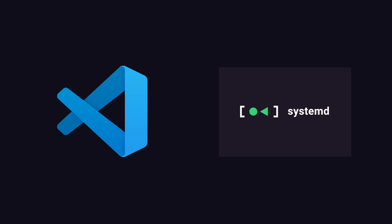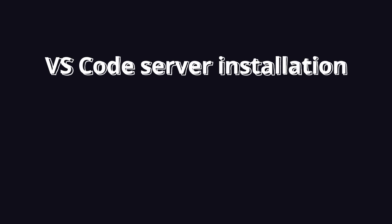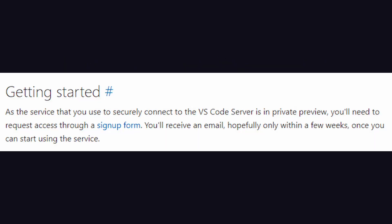I'll be showing you how to make VS Code Server run on system startup so it starts and runs automatically even if your virtual machine restarts, since this feature isn't implemented out of the box. If you want to skip to the VS Code Server installation, please see the timestamp on the screen. Before we go into this, it's best to acknowledge that VS Code Server is not production ready, so it's best we adjust our expectations going into this since I experienced a few minor hiccups along the way when I was using it for a few days.